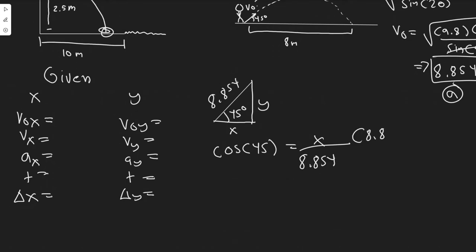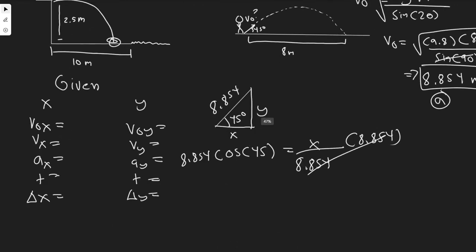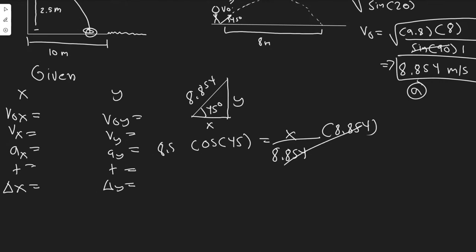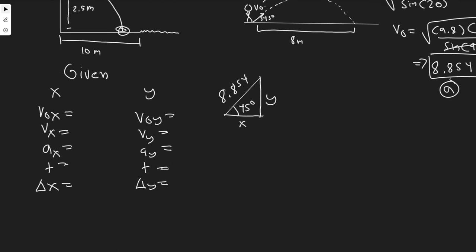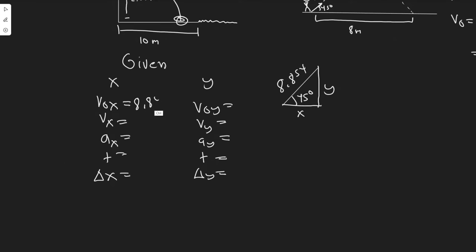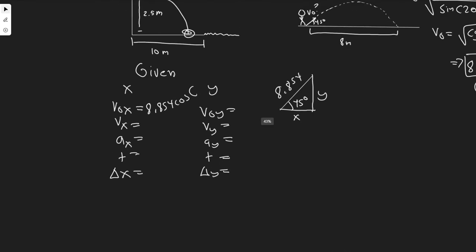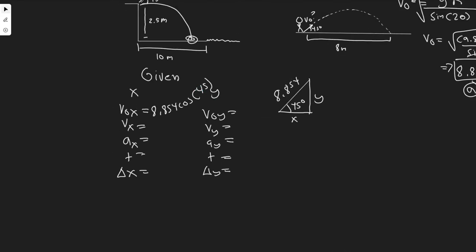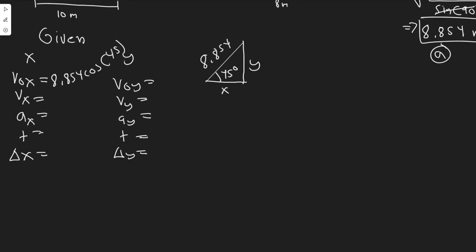If you multiply both sides by 8.854, these will cancel. The x component is 8.854 cosine of 45. Now let's find the y. The y is just sine instead. The sine of an angle is equal to opposite y over hypotenuse, so y over 8.854. Multiplying both sides, you'll get that it's equal to 8.854 sine of 45. So that's how you find that.